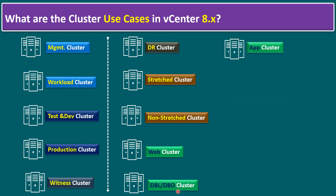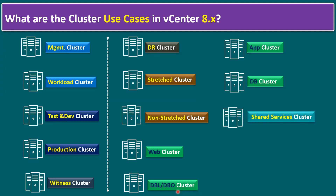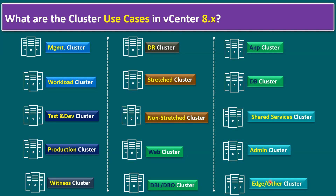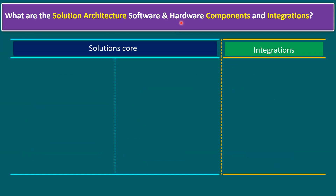The app cluster consists of all application servers. The DB cluster is a mix of all database servers. The shared services cluster covers services like SMTP, SFTP, SFTP, and file servers. The admin cluster is similar to a management cluster but contains dedicated administrator-related VMs like monitoring servers. The edge cluster is dedicated to providing edge services and applications. These are the common cluster naming conventions when using vCenter Server.